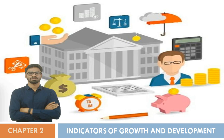In part two we discussed the growth rate of national income and per capita income with their tabular expressions and limitations. In part three we discussed the most important question for this chapter: improvement in quality of life and PQLI. Now we are starting with the fourth and last part for this chapter, which covers Human Development Index — HDI.